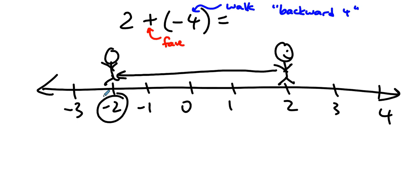These are the two models that we use for addition of integers. We are either using integer chips or we are using the number line.